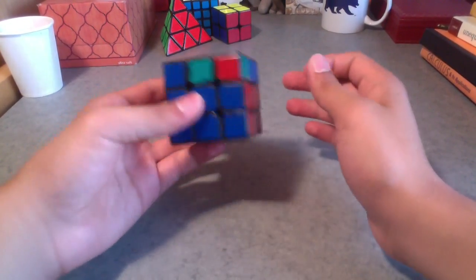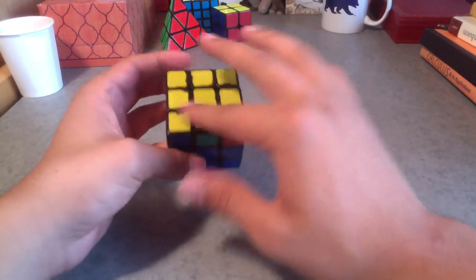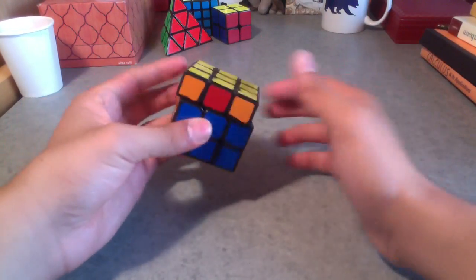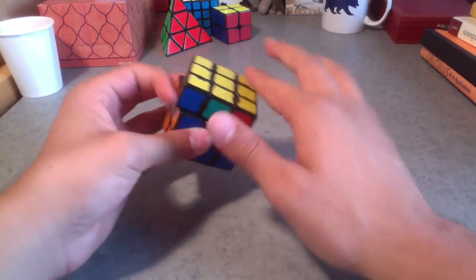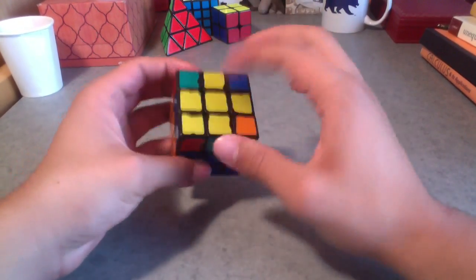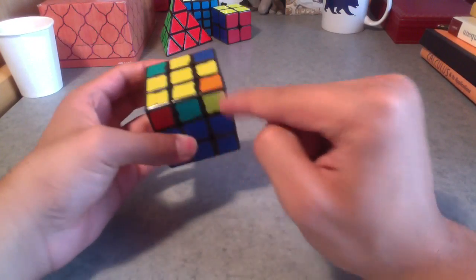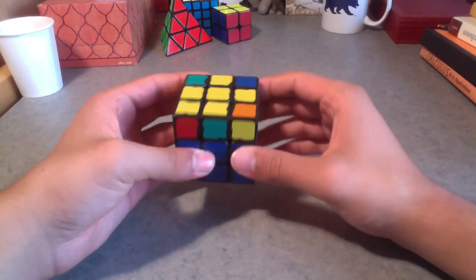So yeah. So after you do that algorithm, it'll just end up with some random combination of yellows, or like random combination of pieces with a yellow solve. So that's once you have the fish, you put the fish's head in the bottom left corner, and that's what you do. You do that algorithm.